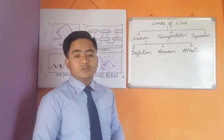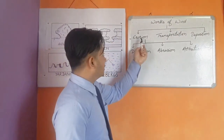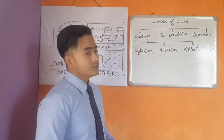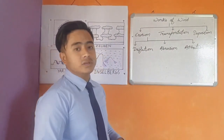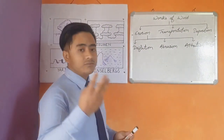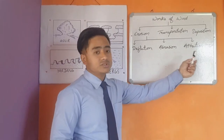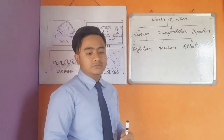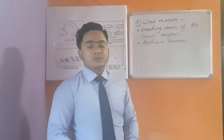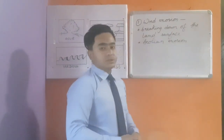Wind performs three major works: erosion, transportation, and deposition. The work of erosion takes place in three ways: deflation, abrasion, and attrition. Let's discuss the first work of wind — wind erosion.